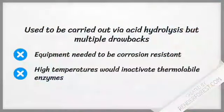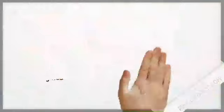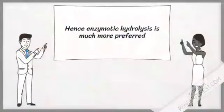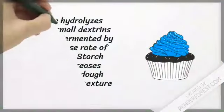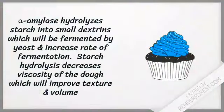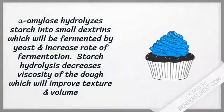Starch hydrolysis was previously done via acid hydrolysis, but this had many drawbacks, such as the equipment needing to be resistant to corrosion, and the high temperatures would also inactivate thermolabile enzymes. Therefore, enzymatic hydrolysis is preferable. Similarly in baking, alpha-amylase hydrolyzes starch into small dextrins, which will be further fermented by yeast, increasing the rate of fermentation. Starch hydrolysis will also decrease the viscosity of the dough, which will improve the texture.